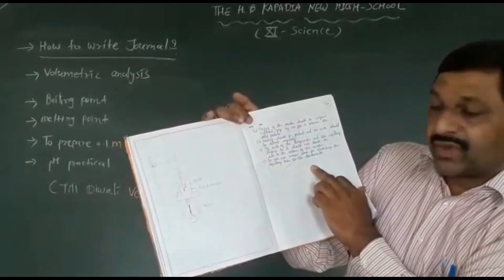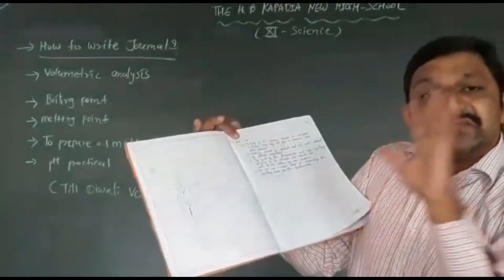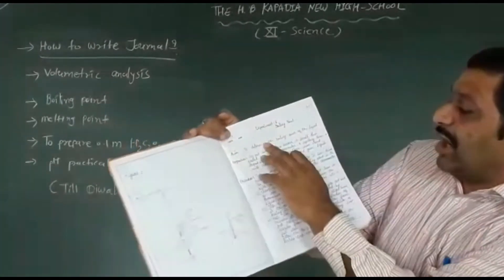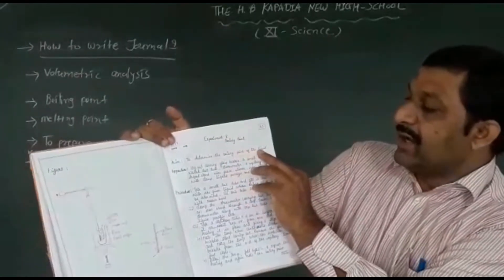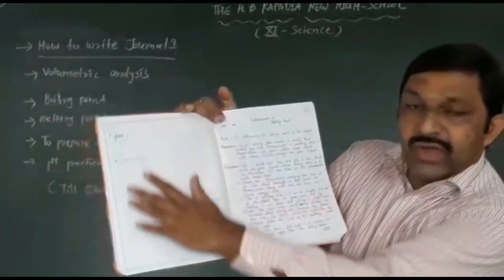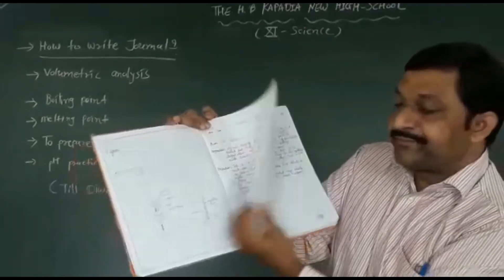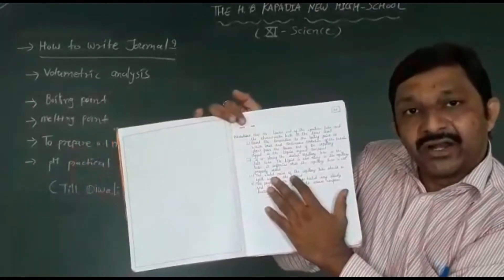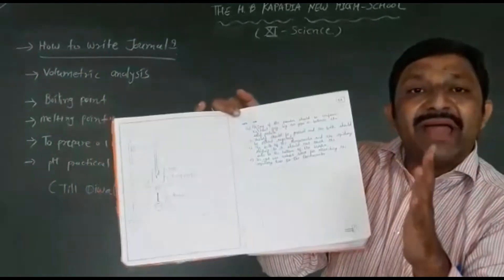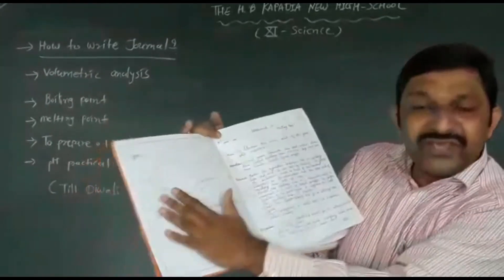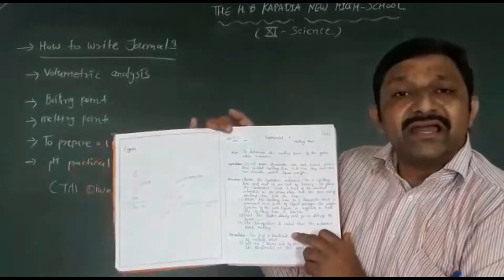Draw the figure in the blank page for melting point. Similarly for boiling point, the aim is: to determine the boiling point of the given liquid. Draw the boiling point figure in the blank page. Write aim, apparatus, procedure, and precautions in the single line page. So for both boiling point and melting point, draw your figure in the blank page and write theory, aim, apparatus, procedure, and precaution in the single line page.